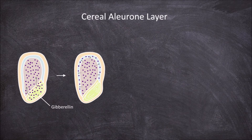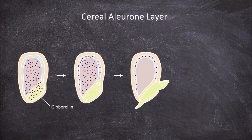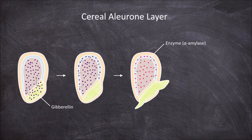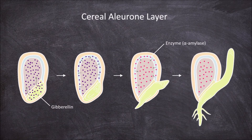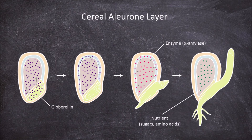Once in the aleurone layer, they induce the synthesis of the enzyme alpha amylase and other hydrolytic enzymes. The alpha amylase and other hydrolytic enzymes are secreted into the starchy endosperm, where they break down the starch within the endosperm into small solutes of nutrients such as sugars and amino acids.